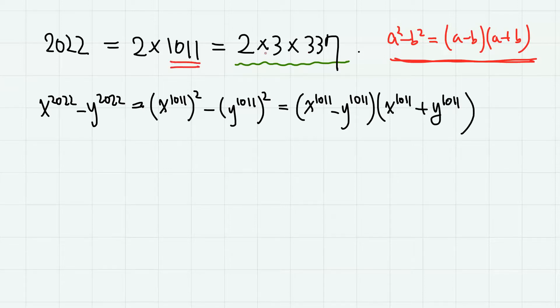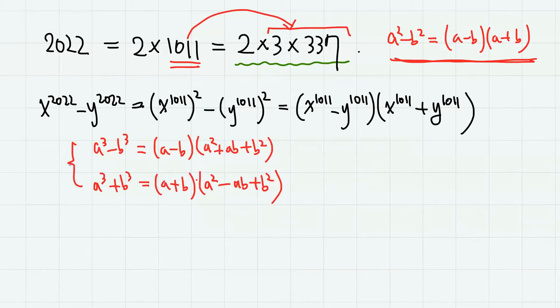And here we know that 1011 is 3 times 337, so we can apply the sum and difference of cubes formulas. First, x to the 1011 minus y to the 1011 is x to the power of 337 cubed minus y to the power of 337 cubed.